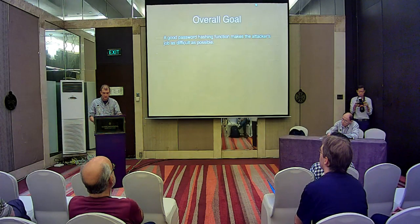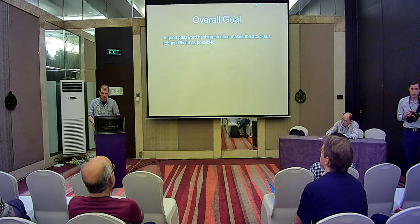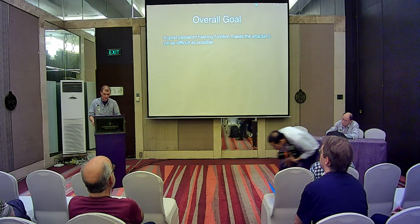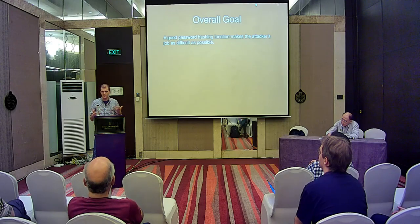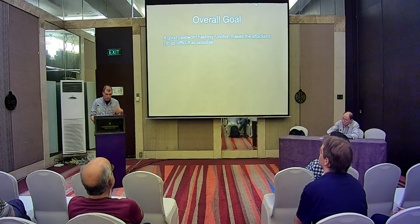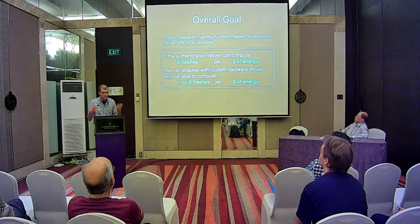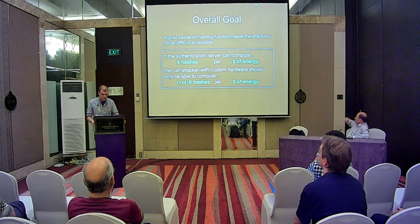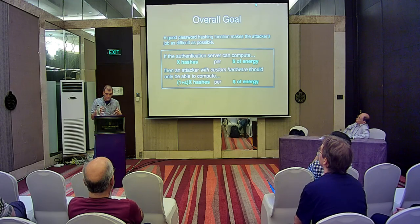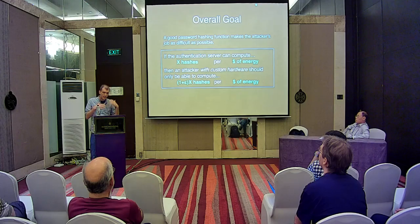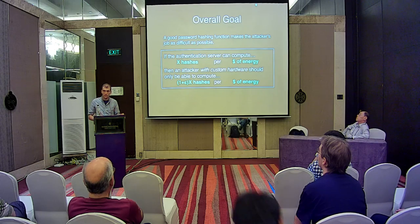If this is what the attacker is trying to do, what we're trying to do as designers is make the attacker work as hard as possible. A good password hashing function makes the attacker's job as costly as possible, subject to the constraint that you still need to log into your system in a reasonable amount of time. If your authentication server can compute some number of hashes per dollar, then an attacker using special-purpose password cracking hardware should only be able to compute something like an epsilon fraction more hashes per dollar of energy.